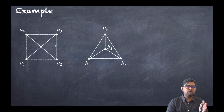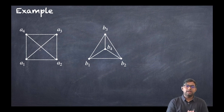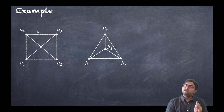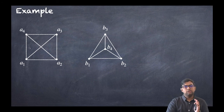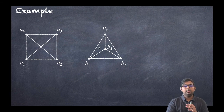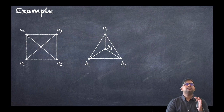By just looking, they appear not isomorphic because one is a square and the other looks like a pyramid or triangle. But it is an isomorphic graph. First, check the number of vertices: the first graph has four vertices, and the second graph also has four vertices — same. Now calculate the number of edges: the first graph has six edges, and the second graph also has six edges. So these two conditions hold.